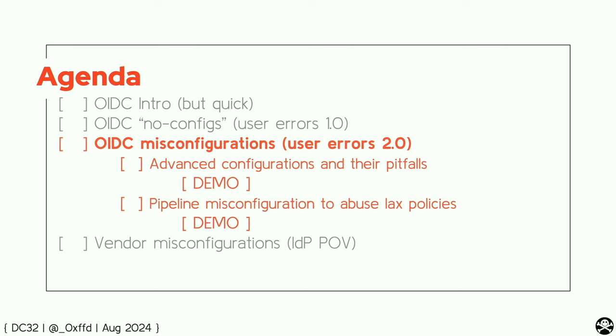Let's move to misconfiguration when you do some configurations but they're insufficient. We're going to see some pitfalls for advanced configurations, including a demo. And then we're going to see how you can abuse pipelines — this is partially what Adnan talked about in the last talk — but we're going to see how we can abuse lax policies and access various identities.